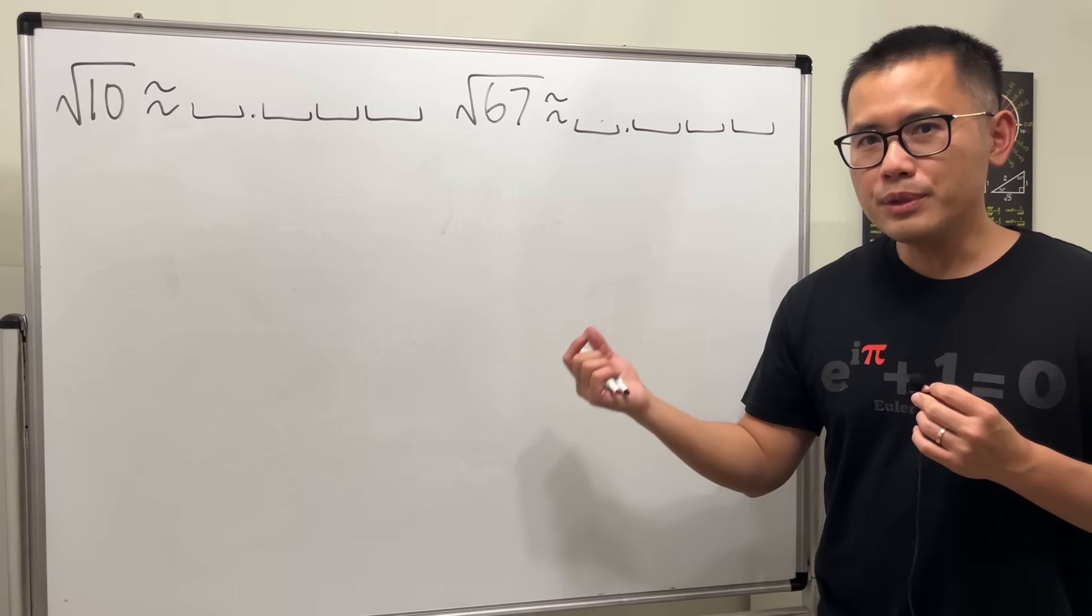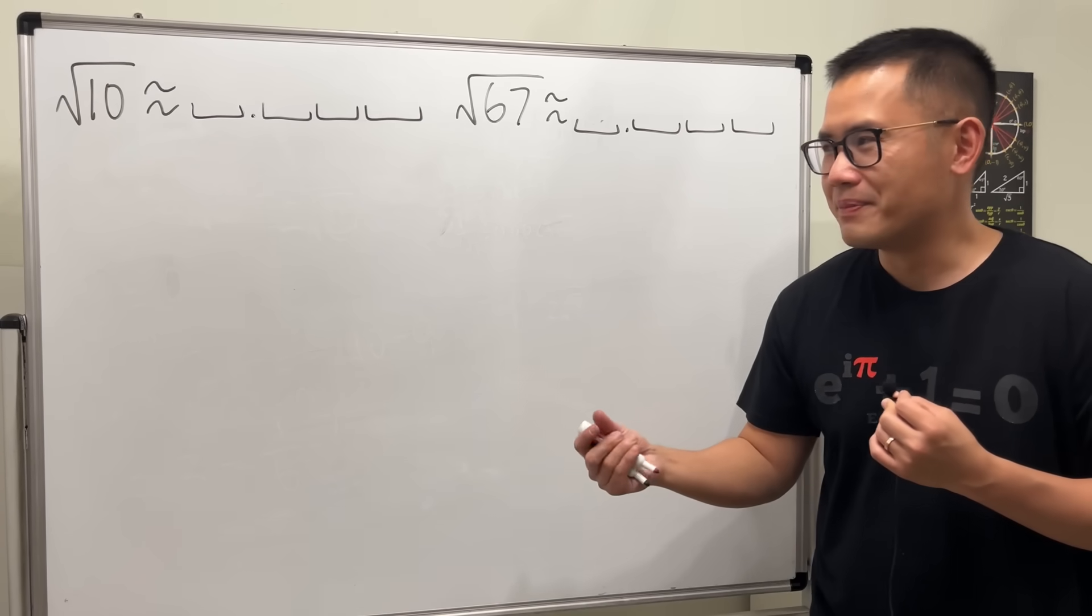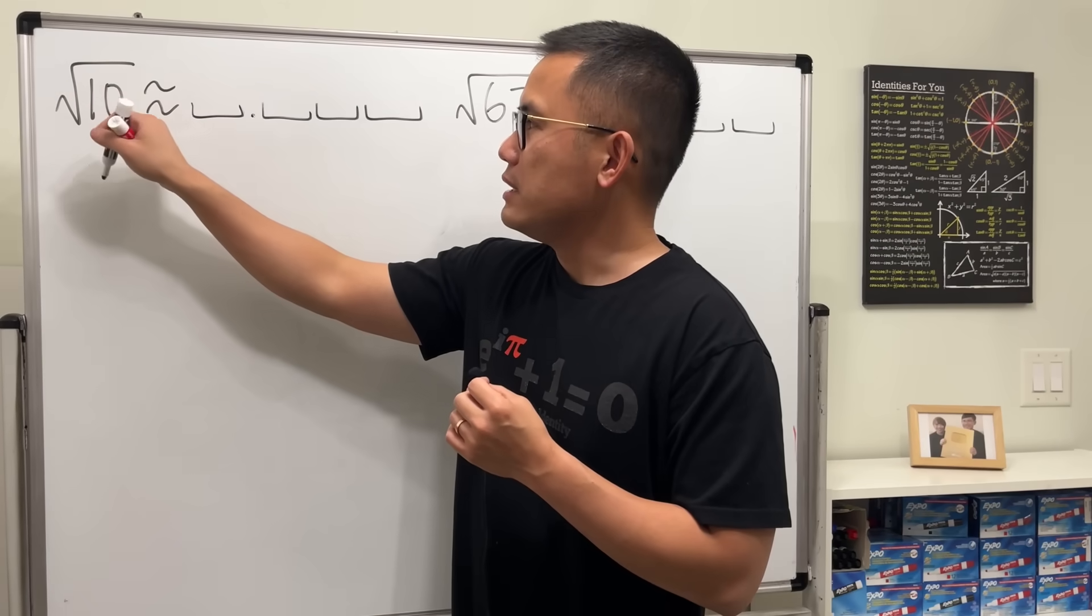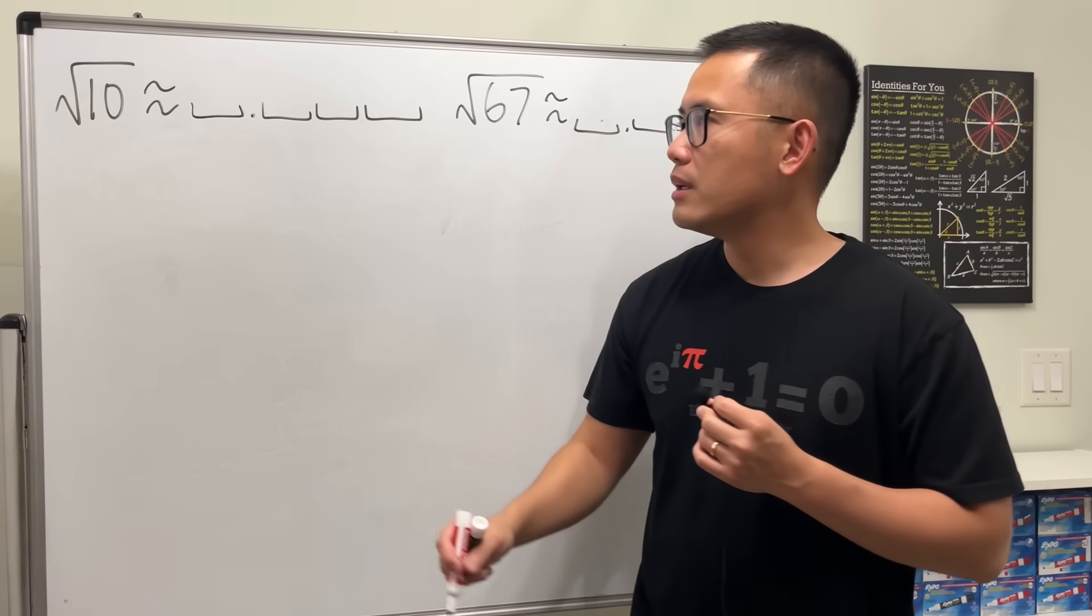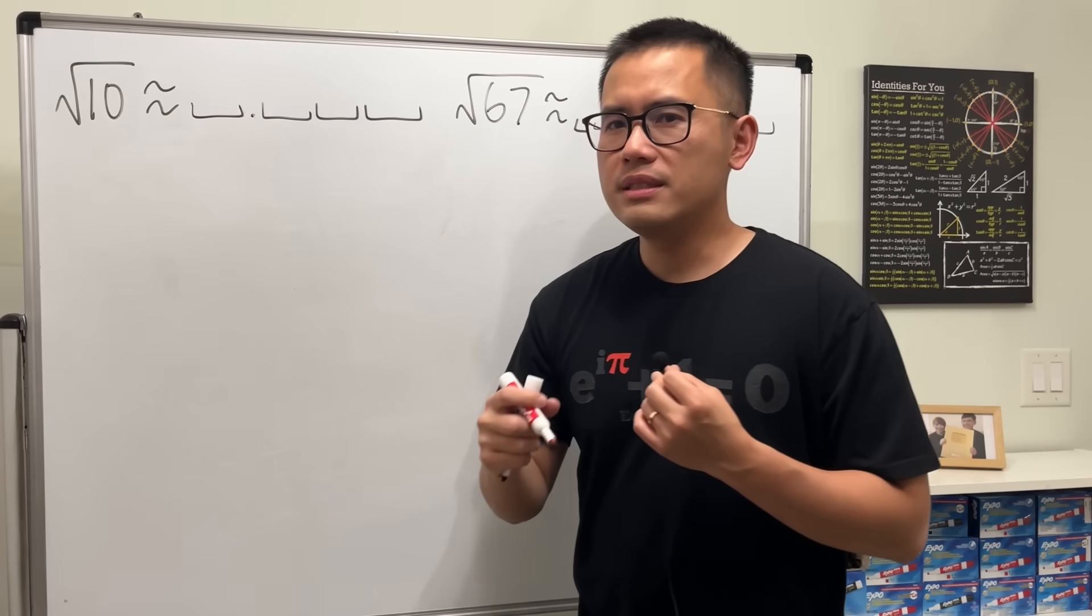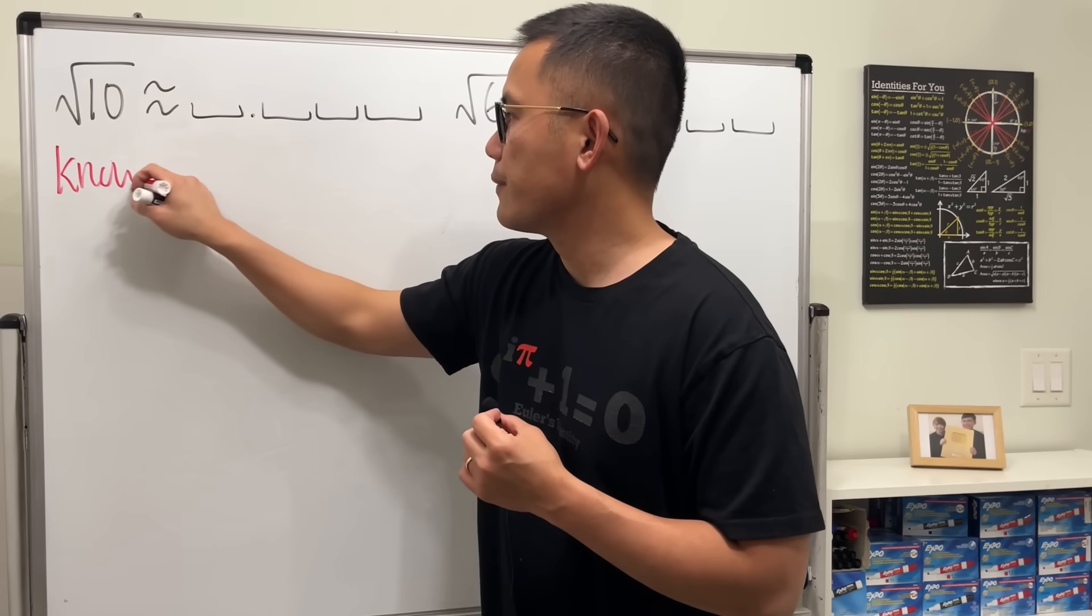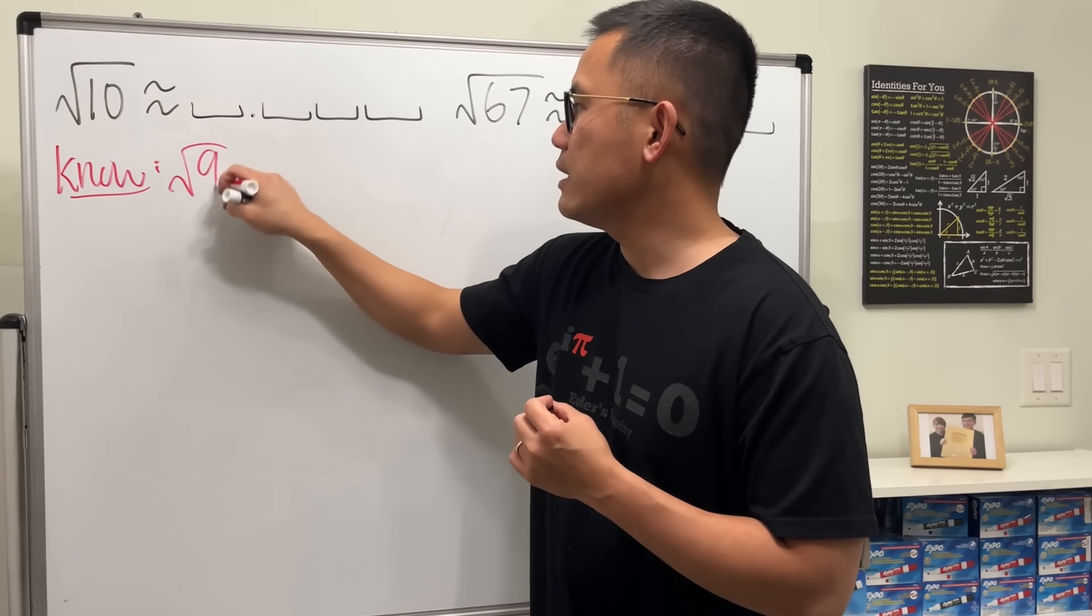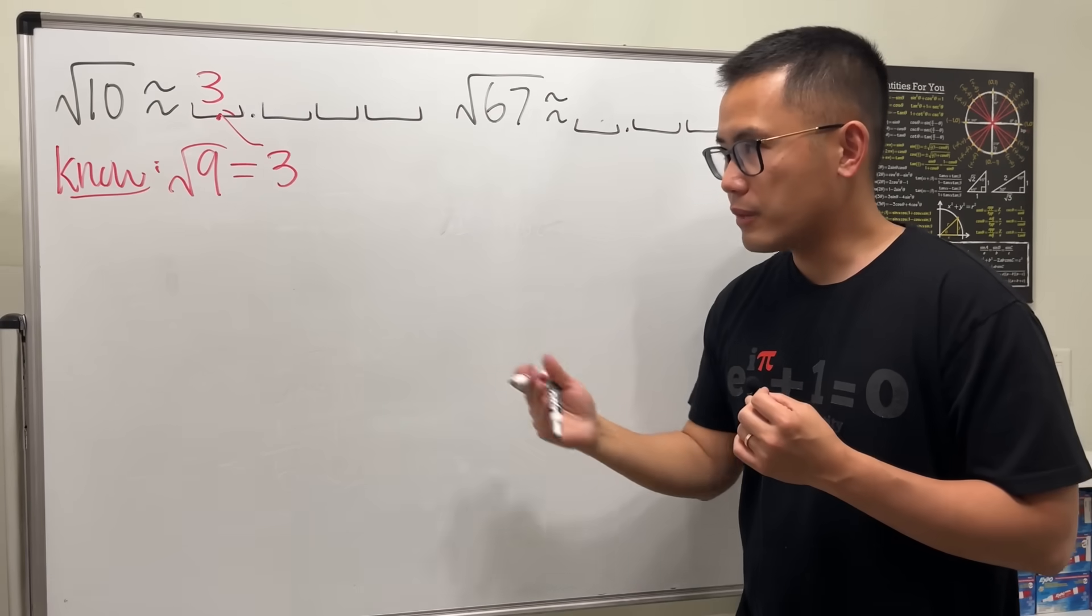So here we go. I'm going to call this the happy face method because I just made that name. Anyways, firstly, when you see square root of 10, you should be able to tell me that's like 3 point something, right? Because this right here is a little bit bigger than square root of 9. So this is what we know: square root of 9, and we know that's equal to 3. So that must be going right here. So we must have 3 point something, right?